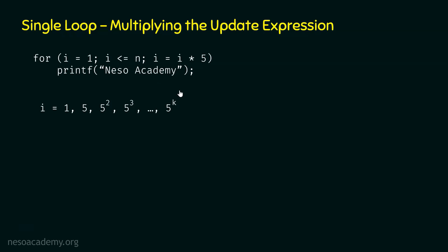Now, how many times does this loop run? Observing the pattern carefully: in the first iteration we have 5 power 0, so the power is 0. In the second iteration we have 5 power 1, in the third iteration 5 power 2, in the fourth 5 power 3. So for 5 power k, the iteration number is clearly k plus 1. As for power 3 the iteration number is 4, and for power 2 it is 3. Therefore this loop will run k plus 1 times, meaning the frequency count of this instruction is k plus 1.